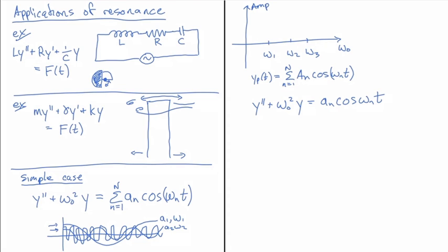When I plug in a yₚ that does not have this sum term, it's just going to be this piece, I get -ωₙ² from the two derivatives times capital Aₙ times cos(ωₙt), plus ω₀² times Aₙ cos(ωₙt), and that's got to be equal to little aₙ cos(ωₙt).